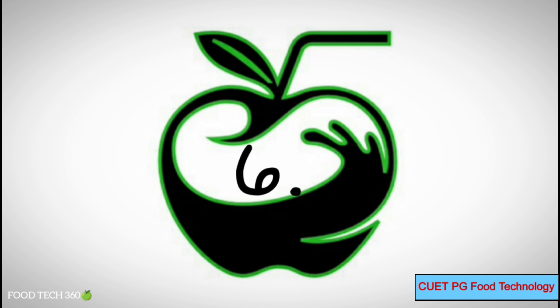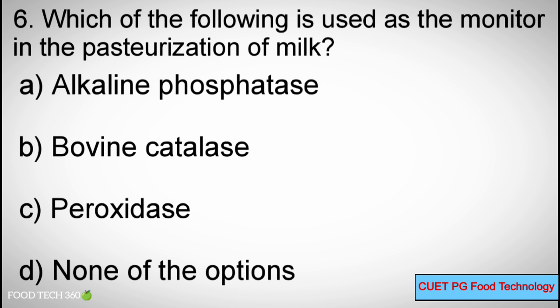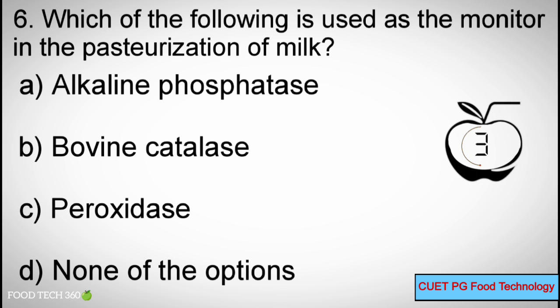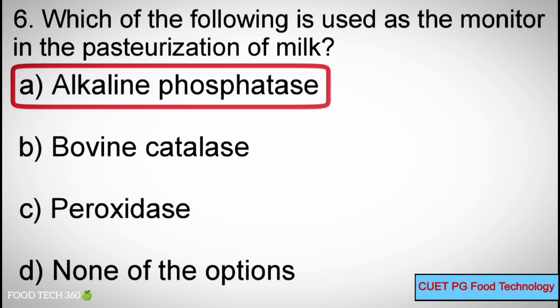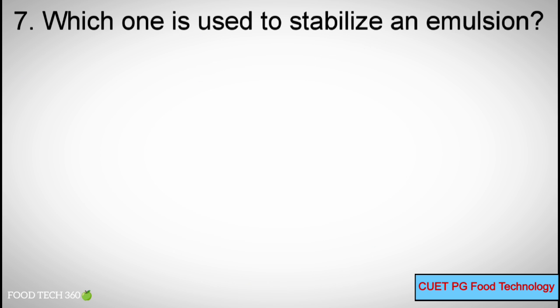Q6: Which of the following is used as the monitor in the pasteurization of milk? A. Alkaline phosphatase, B. Bovine catalase, C. Peroxidase, D. None of the options. Correct answer: A. Alkaline phosphatase.